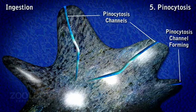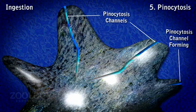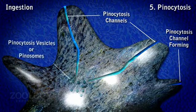It is thought that plasma lemma bound with colloidal material flows into the penocytosis channels. From the inner ends of these channels, penosomes containing engulfed liquid material are formed.